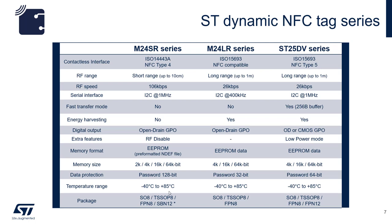The other series are SD25DV and M24LR, which both support ISO 15693. The main differences between M24LR and SD25DV are the availability of a 256-byte volatile memory buffer, 1 MHz I2C speed, field detection, and 64-bit passwords.